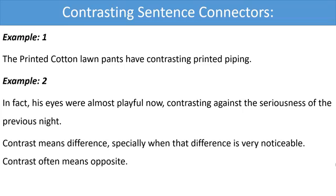I should give you some ideas about contrasting sentence connectors. Here are some examples. Example one: 'The printed cotton lawn pants have contrasting printed piping.' Example two: 'In fact, his eyes were almost playful now, contrasting against the seriousness of the previous night.' In each sentence, two contrasting ideas are given. Contrast means difference, especially when that difference is very noticeable — contrast often means opposite.